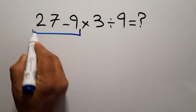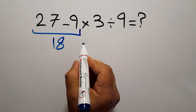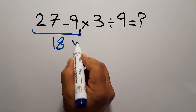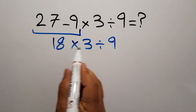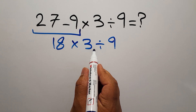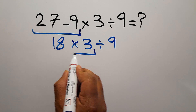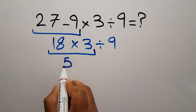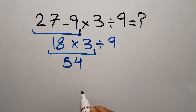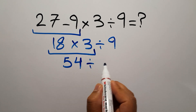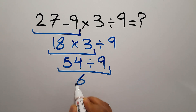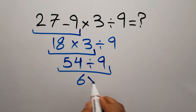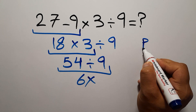Starting with 27 minus 9 gives us 18, so 18 times 3 divided by 9. 18 times 3 gives us 54, and 54 divided by 9 equals 6. But this answer is not correct because according to the order of operations, which is PEMDAS...